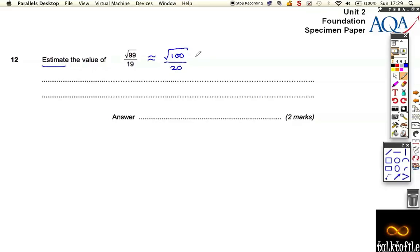Those numbers are quite a lot easier. Now I'm using straight equals because what I'm about to do is the same as here - this was approximately equal to that. Square root of 100 is 10, so